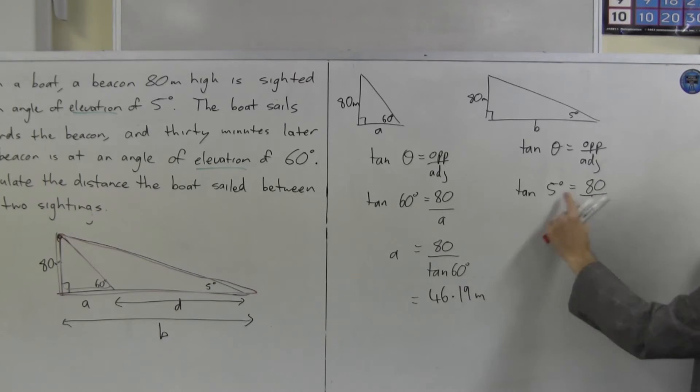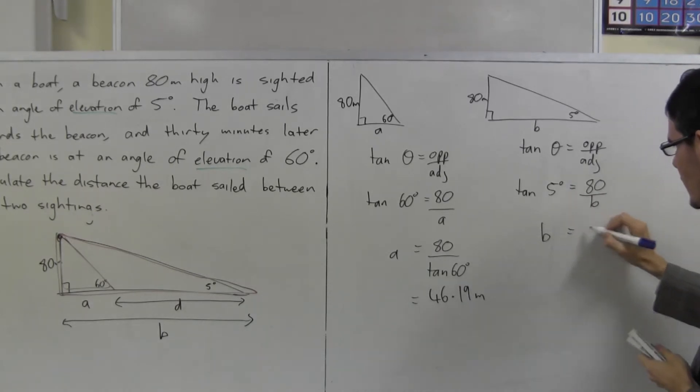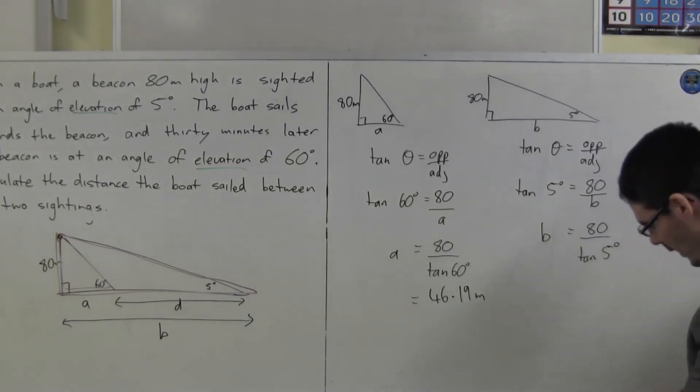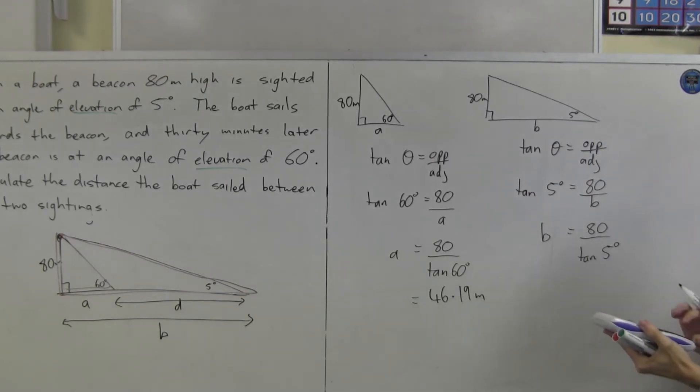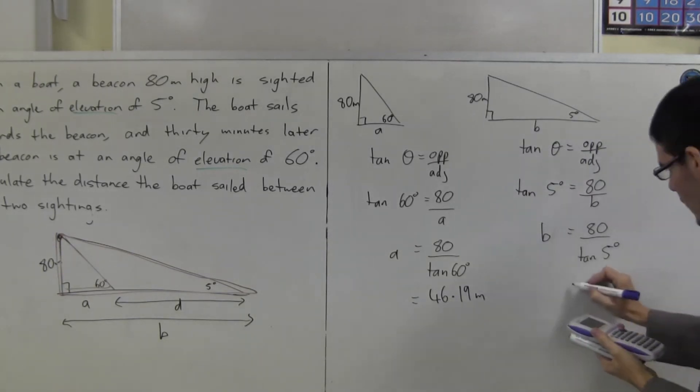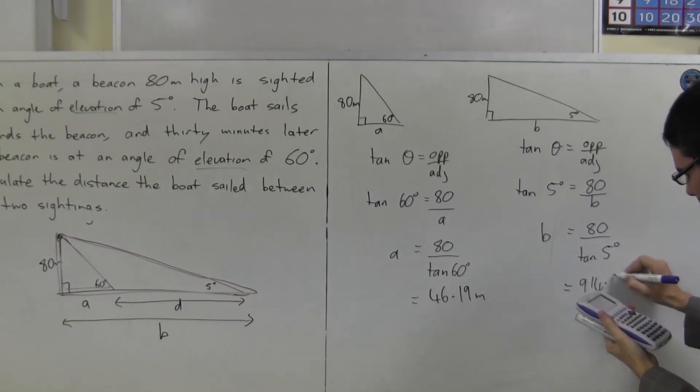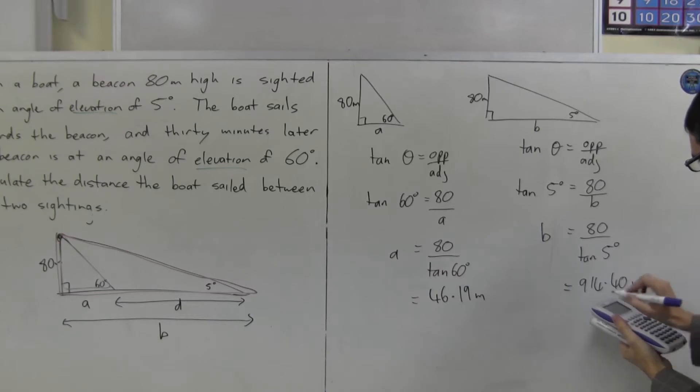So, cross multiply. B is 80 on tan 5 degrees. Okay. Calculator. 80 on tan 5. B is 914.40 metres.